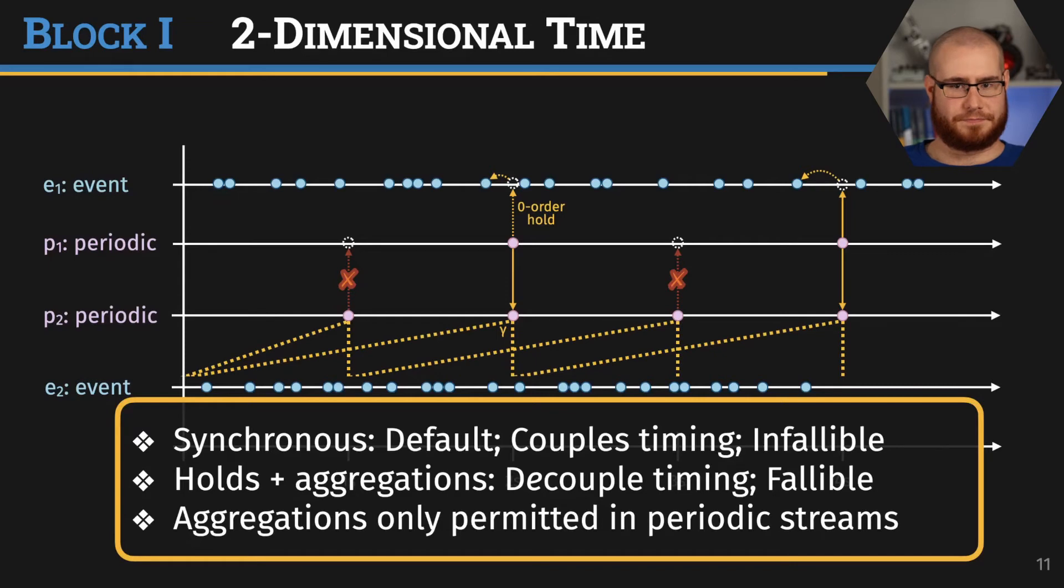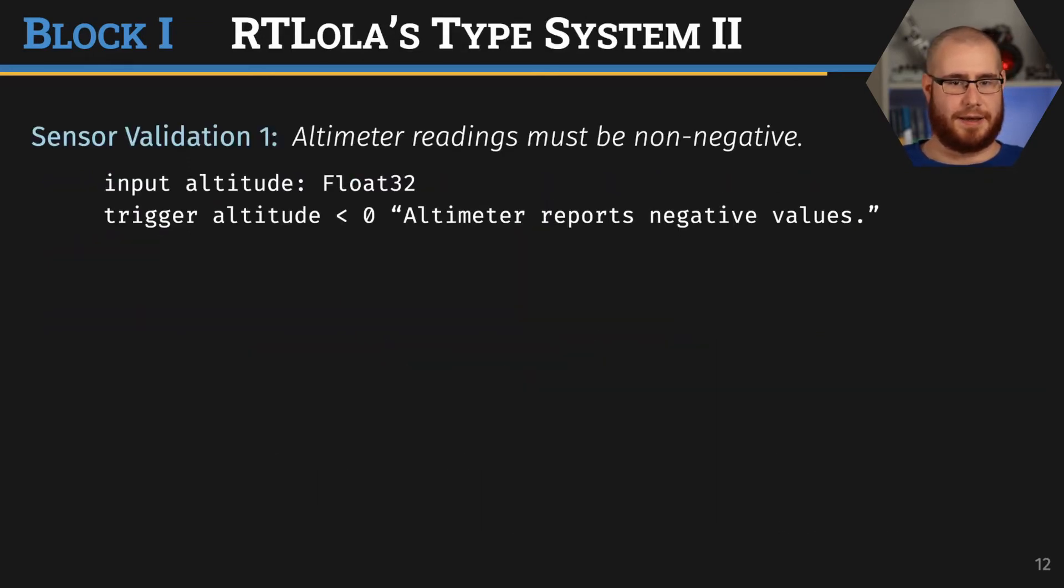Now let's see the type system in action. For this, let's go back to our sensor value validation for the altimeter. Here we can see that the input stream altitude has the annotated value type Float32. The pacing type for each input is just the input itself—this is tautological because it says altitude will get a new value if altitude gets a new value. For the trigger, we know that we access the altitude value, which is a float, and compare it against zero. The result is a Boolean value, which is required for triggers. The timing is coupled to altitude because we access it synchronously. The type of the trigger is Bool | altitude. This is critical because the pacing type is coupled to altitude, which ensures timeliness—whenever altitude gets a new value, we immediately evaluate the trigger condition and give an output.